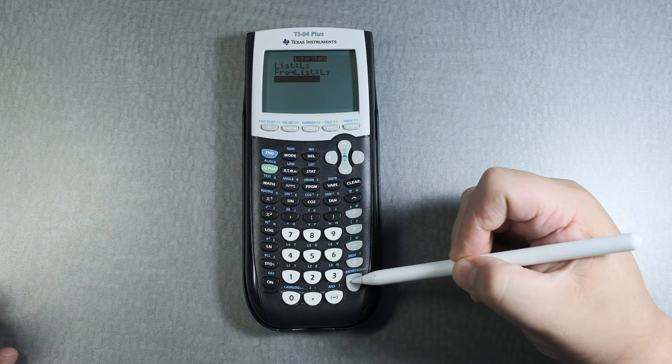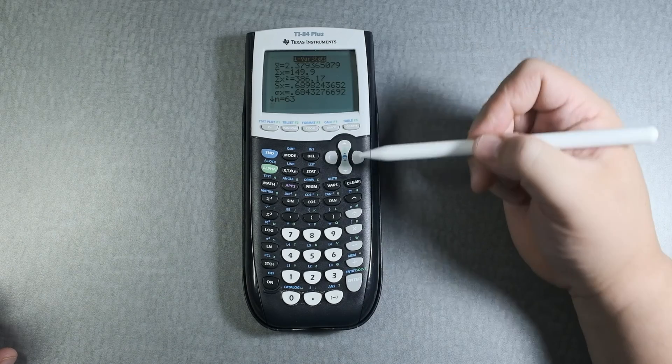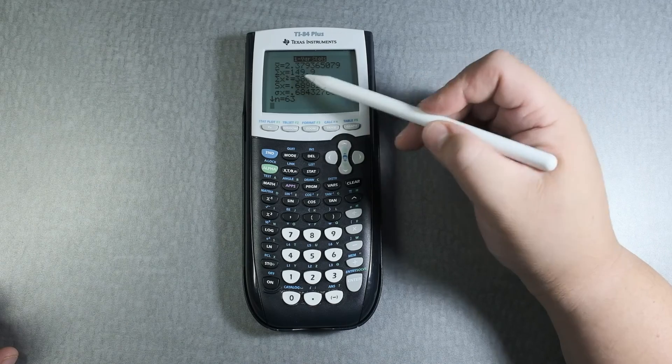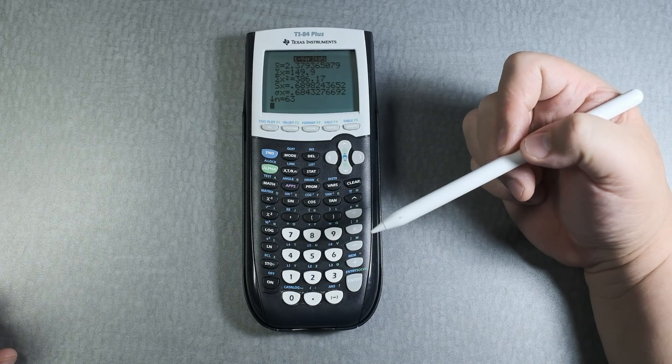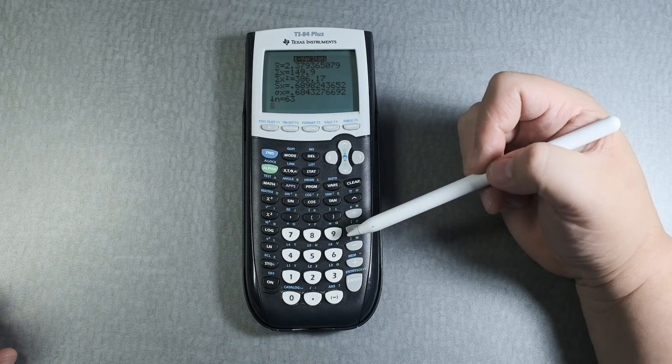Let's calculate. Let's enter. And that's the information. The mean is 2.379. That kind of makes sense and then it gives you the standard deviation as well.